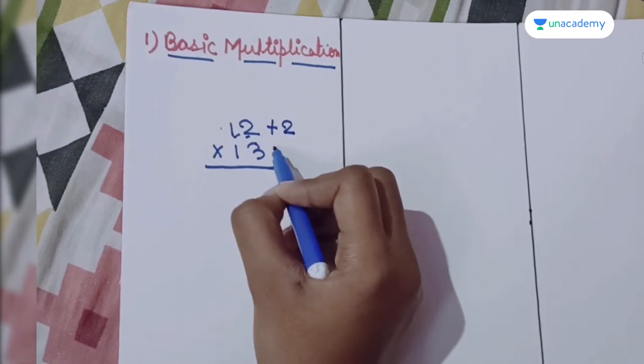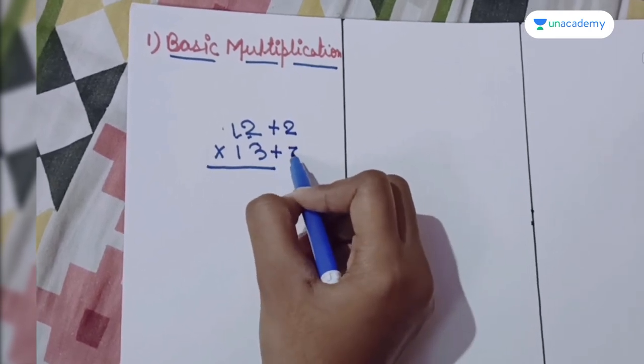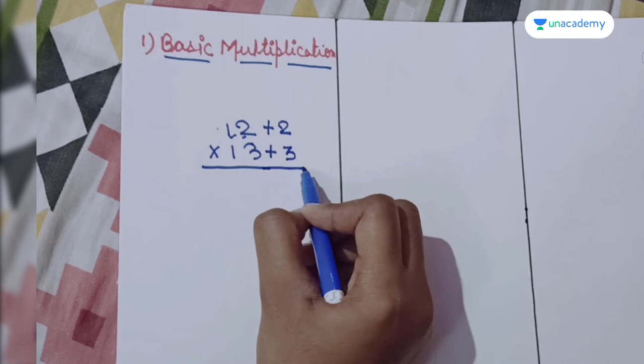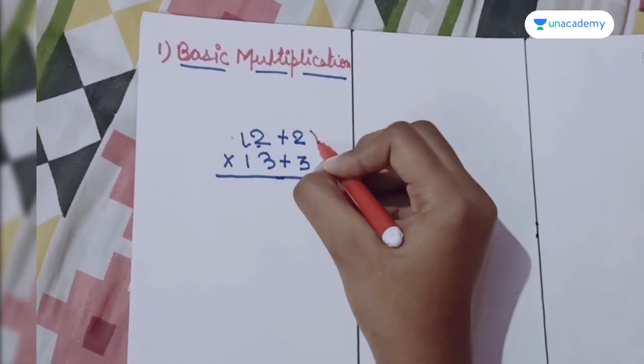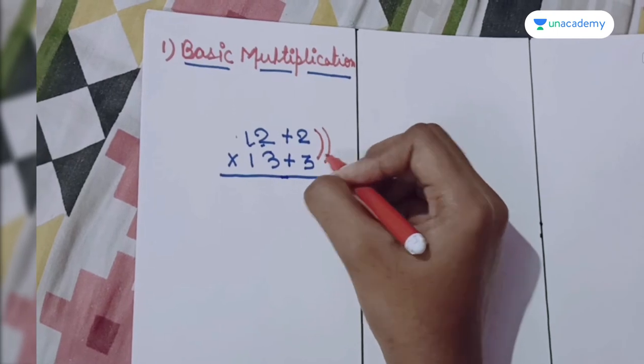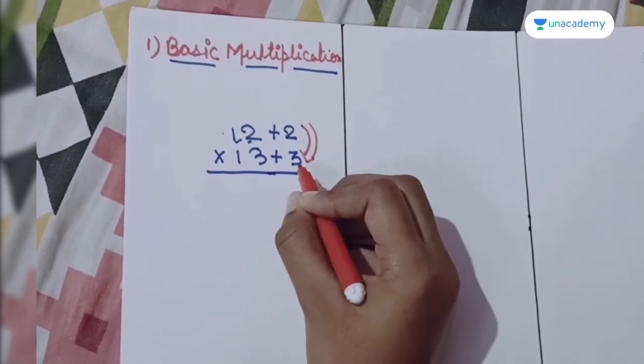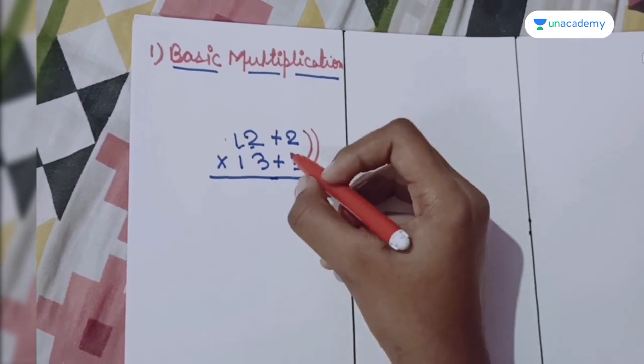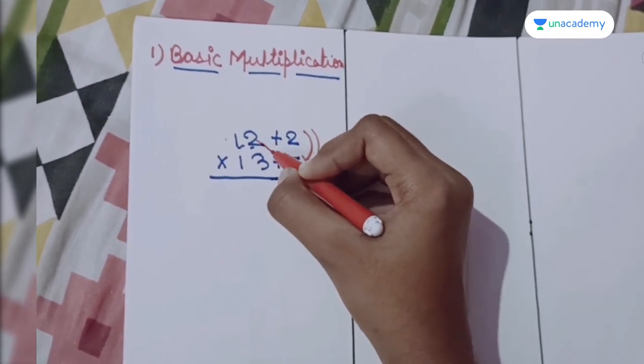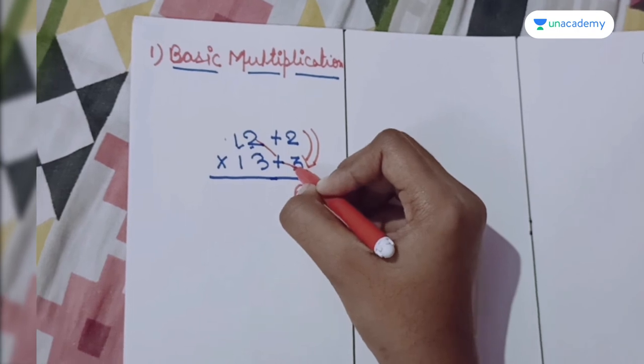Here plus 2 and here 13. First we will multiply these two numbers, so 3 times 2 is 6. Then we will add these two numbers.